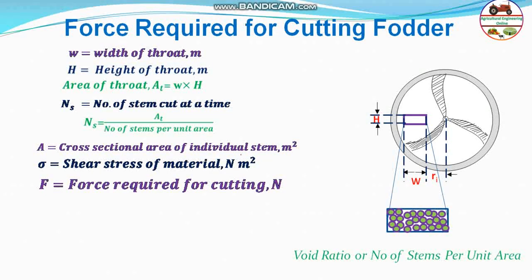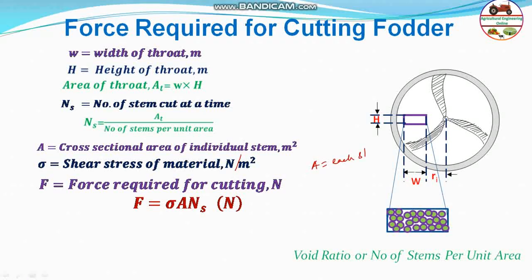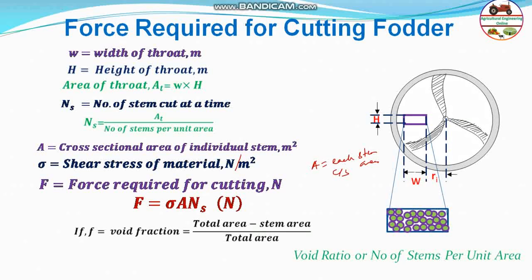The force required equals the cross-sectional area of each stem multiplied by the number of stems, multiplied by the shear stress sigma. So force F equals sigma times A times ns. If the void fraction (ff) is given, the void ratio is: (total area minus stem area) divided by total area. From this you can calculate the stem area, and use it directly instead of A times ns to find the total force required for cutting fodder.